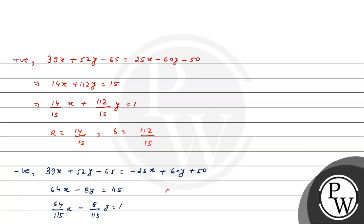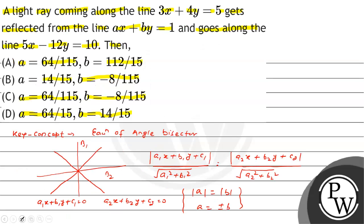See the option: 64 by 115, b equal minus 8 by 115, that is option C is the correct option. Hope you understood it well. Best of luck.